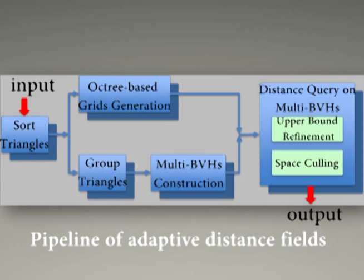We first sort triangles and then generate an octree for sampling points. We group triangles and construct the multi-bounding volume hierarchies. Finally, we query the distance on multi-bounding volume hierarchies using space culling.